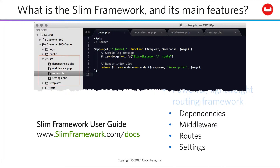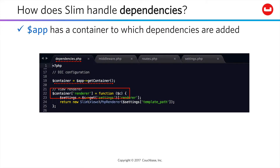These files are where most of the work of this course will be concentrated. You'll have route handling code, dependencies, middleware, and settings. SLIM handles dependencies through a container associated with the app object, which is the core of the whole framework.